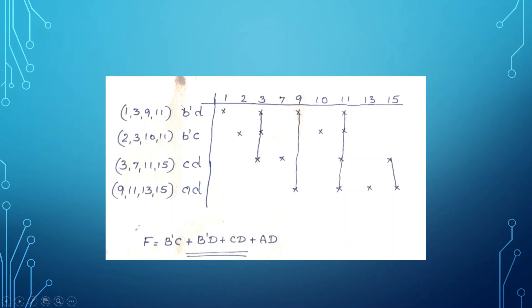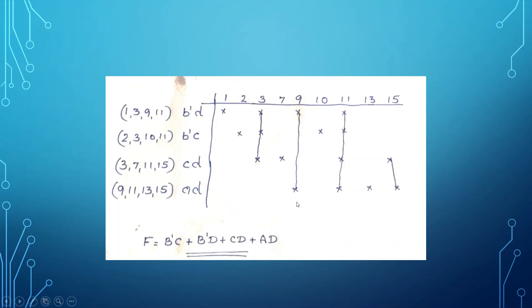It is not necessary that prime implicants and essential prime implicants are always the same — sometimes one or two can be eliminated. If you have confusion picking essential prime implicants, apply Patrick's method for the final simplified solution. Incompletely specified functions work exactly like the Quine-McCluskey method — don't care conditions are just treated as regular minterms throughout the solving procedure.